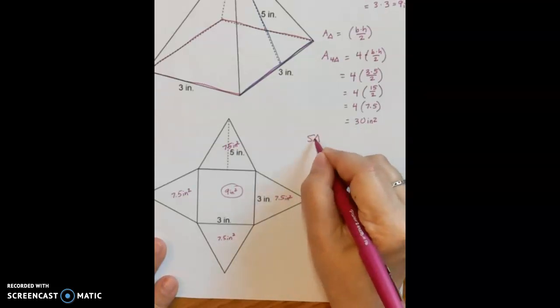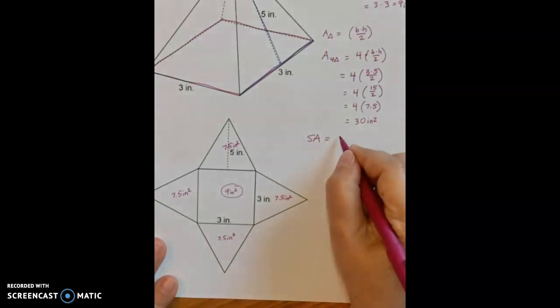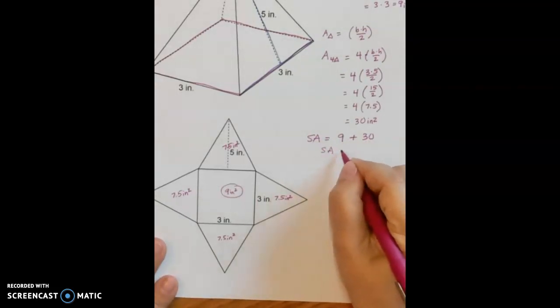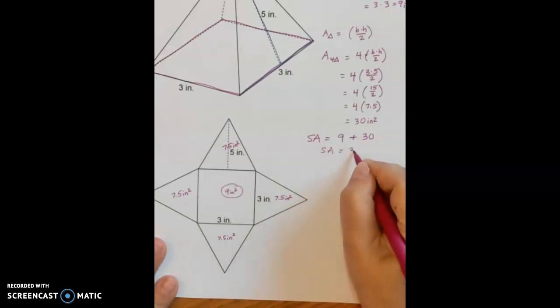So now in order to find the surface area I'm going to add together the area of the base plus the area of the triangular sides, and my total surface area is 39 square inches.